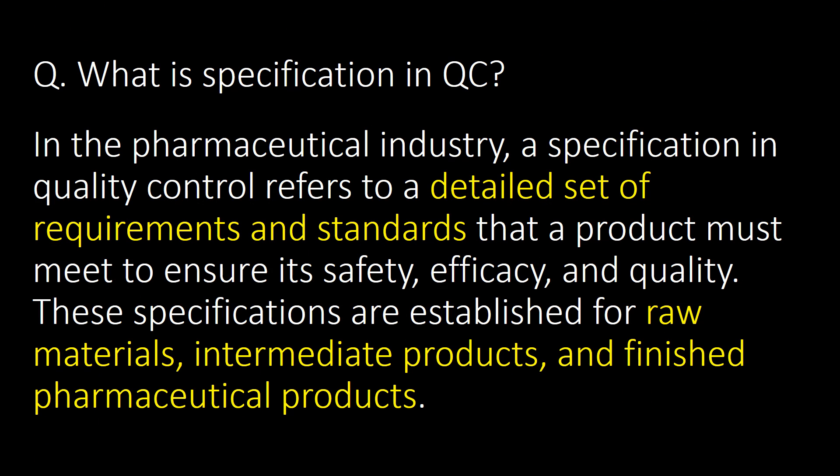What is a specification in QC? In the pharmaceutical industry, a specification in quality control refers to a detailed set of requirements and standards that a product must meet to ensure its safety, efficacy, and quality. These specifications are established for raw materials, intermediate products, and finished pharmaceutical products.